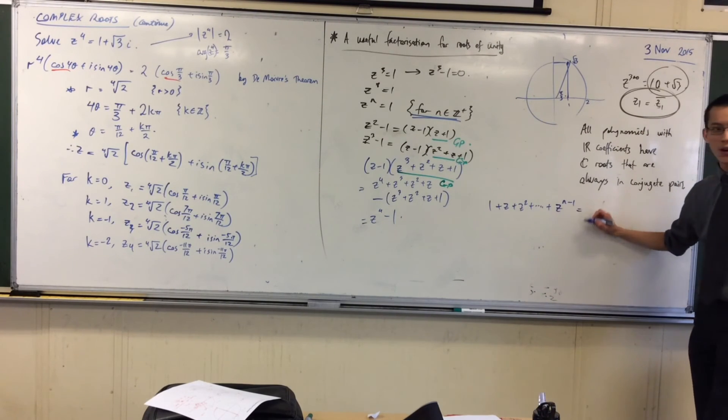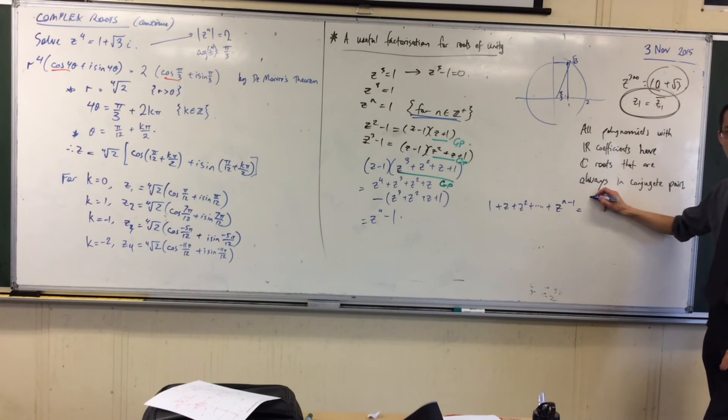So, by definition, the sum of this thing is A, first term, times the common ratio to the power of the number of terms there are, take away one, divided by the common ratio, take away one, right?